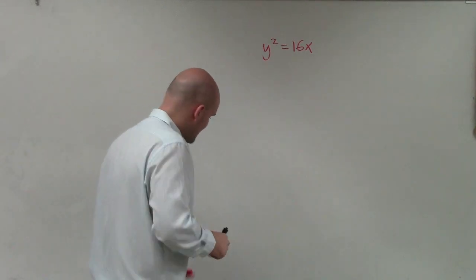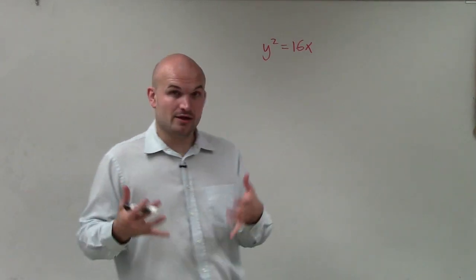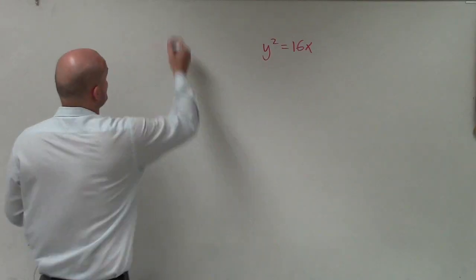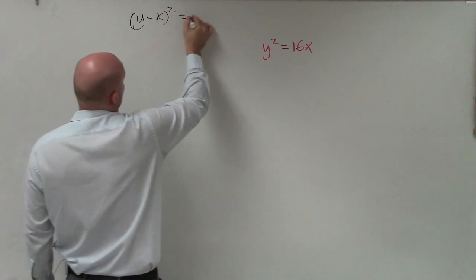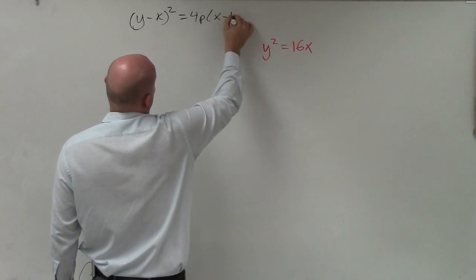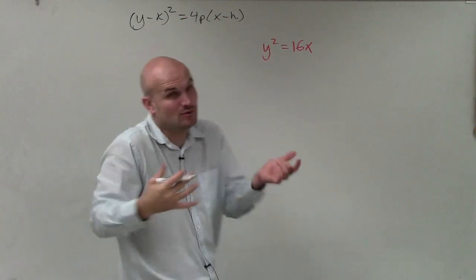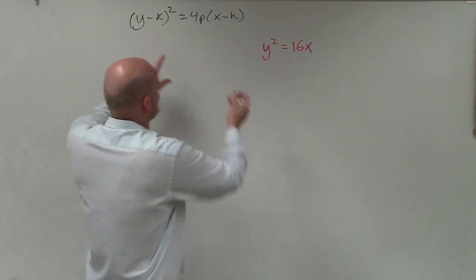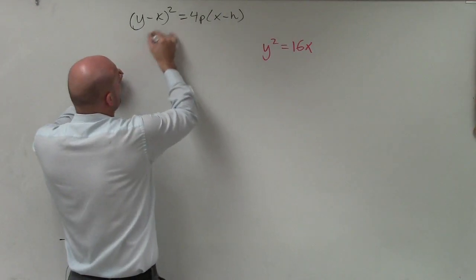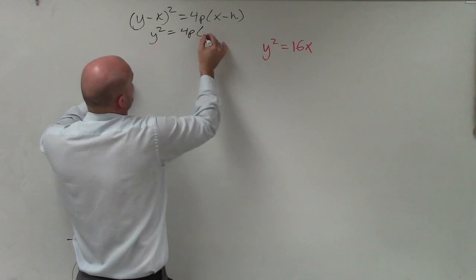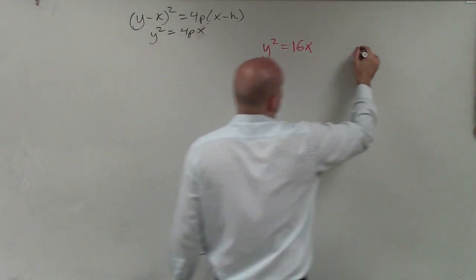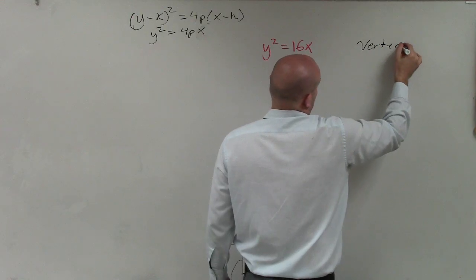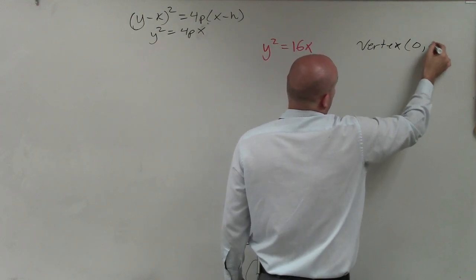So the next thing I want to do is identify where the vertex is. And if you look at our form that we have, (y - k)² = 4p(x - h), you can notice that there is no k and h. There's no parentheses that we're subtracting. It's just simply y² = 4px. So therefore, you can say that the vertex is at (0, 0).